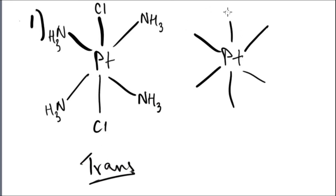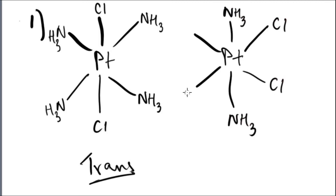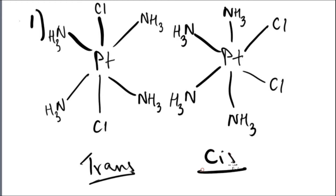For cis, the chlorine atoms will be on the same side. You can see that the chlorine atoms are on one side and then you have the ammonia molecules scattered over the rest of the bonds.